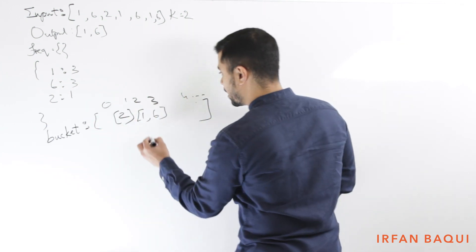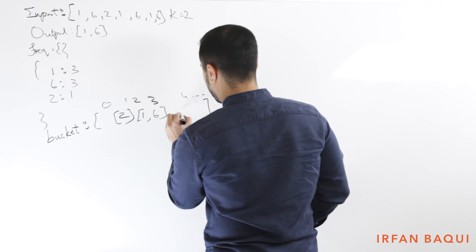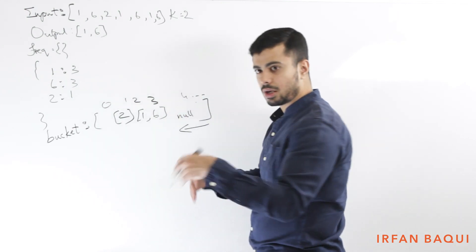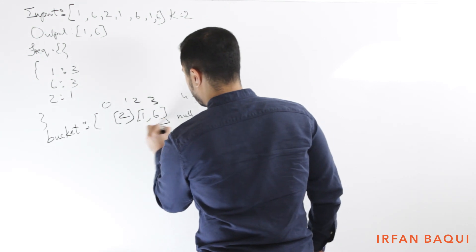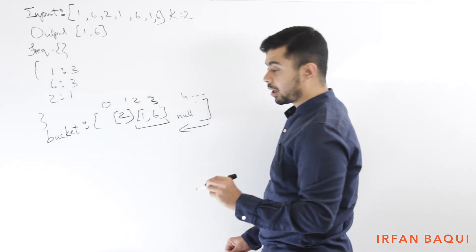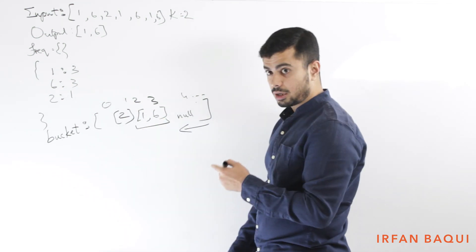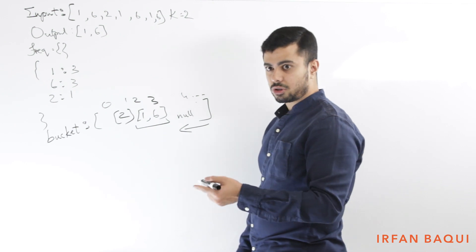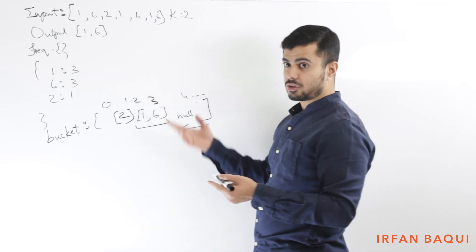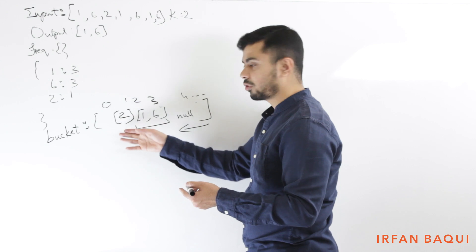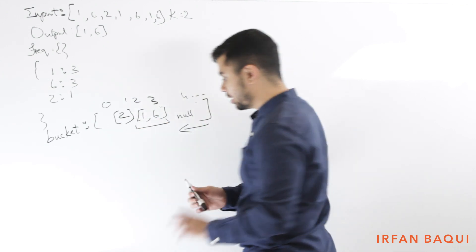Because if I'm looking for the two most frequently occurring elements, then I will encounter them from the end upwards. So in this case, I will go this way and all these will be null, 4, 5, 6, 7. They'll all be null. And then I encounter the bucket for frequency 3, I have two elements in there. I'll push those to my results. And I'm done because k is 2. If k was 3, then I would go further and I'll push 2 in that as well.